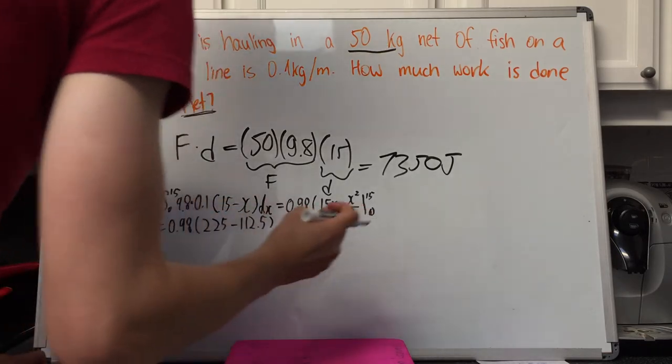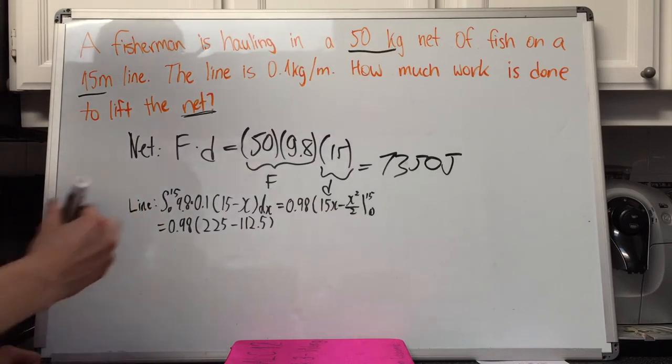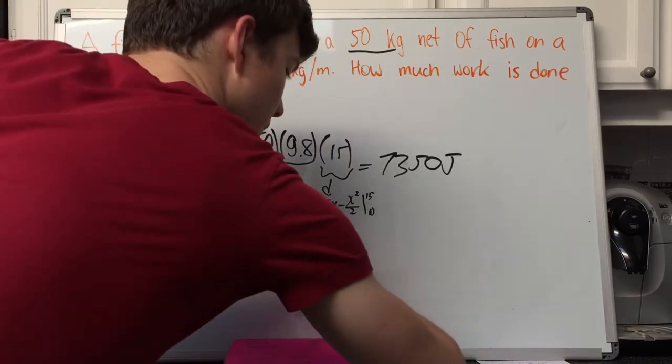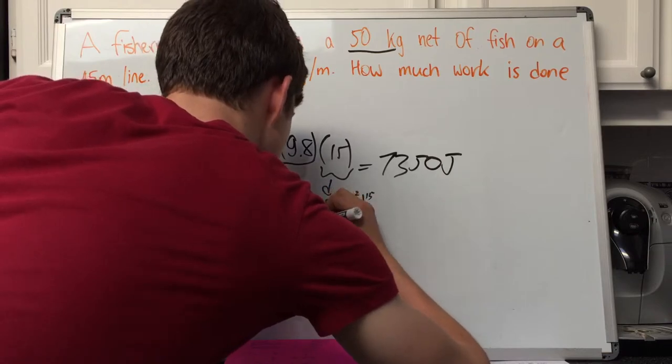225 minus 112.5 is 112.5. Multiplied by 0.98, we end up with 110.25 joules.